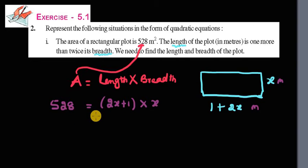Now we substitute the values and simplify. 528 equals—this is a binomial times a monomial. So 2X into X is 2X squared, plus 1 into X is X.